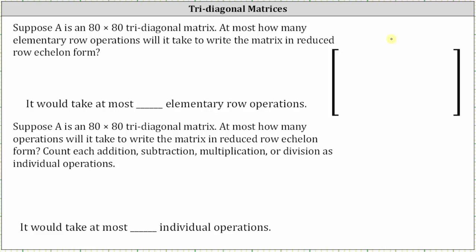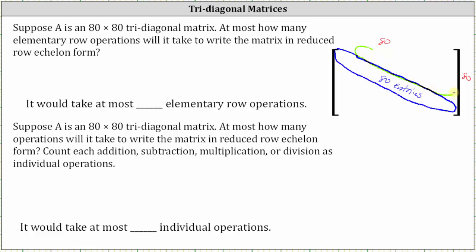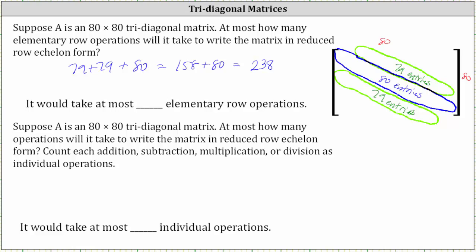Now consider an 80-by-80 tridiagonal matrix. There would be 80 nonzero entries along the main diagonal, and there would also be 79 nonzero entries above the main diagonal as well as 79 nonzero entries below the main diagonal. At most, how many elementary row operations will it take to write it in reduced row echelon form? It would take up to 79 plus 79 elementary row operations to get the zeros, and then plus at most another 80 to get the ones. That is 158 plus 80, which equals 238. It would take at most 238 elementary row operations to write the matrix in reduced row echelon form.